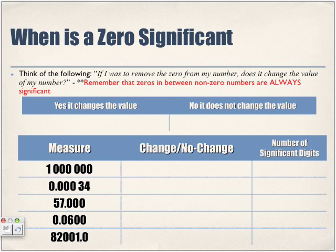When is a zero significant? That's really the hardest part of significant digits — knowing when to include zeros as significant digits and when not to. Think of it this way: if you remove the zero from the number, does it change the value? Remember, zeros in between non-zero numbers are always significant — that rule doesn't apply here. If removing the zero changes the value, it is not significant. If it does not change the value, it is significant.